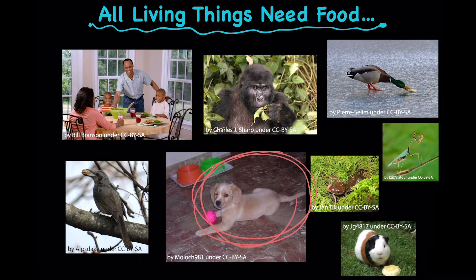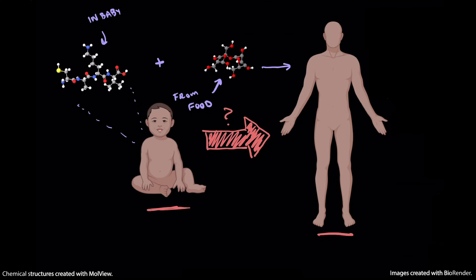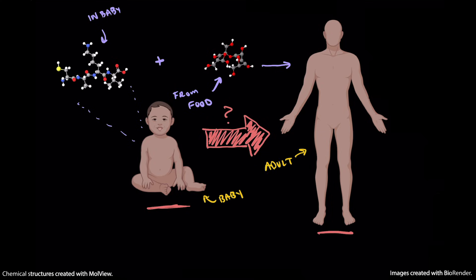So right there and then, we've already kind of answered our question from before, which, reminder, was how do people go from small to big. So what's happening is that this baby becomes an adult by eating food, milk, formula, gushy stuff, whatever babies eat.